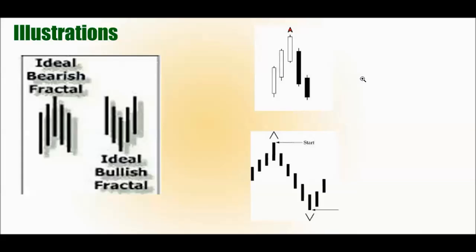Okay, so what does a fractal pattern look like? Like we mentioned, it's a five-candle reversal candlestick pattern. And basically, looking at this chart here, ideal bearish fractal, the third candle is the key. And if in the context of an uptrend, if the third candle is the highest high, then that's a sign that it's time to switch or time to short.